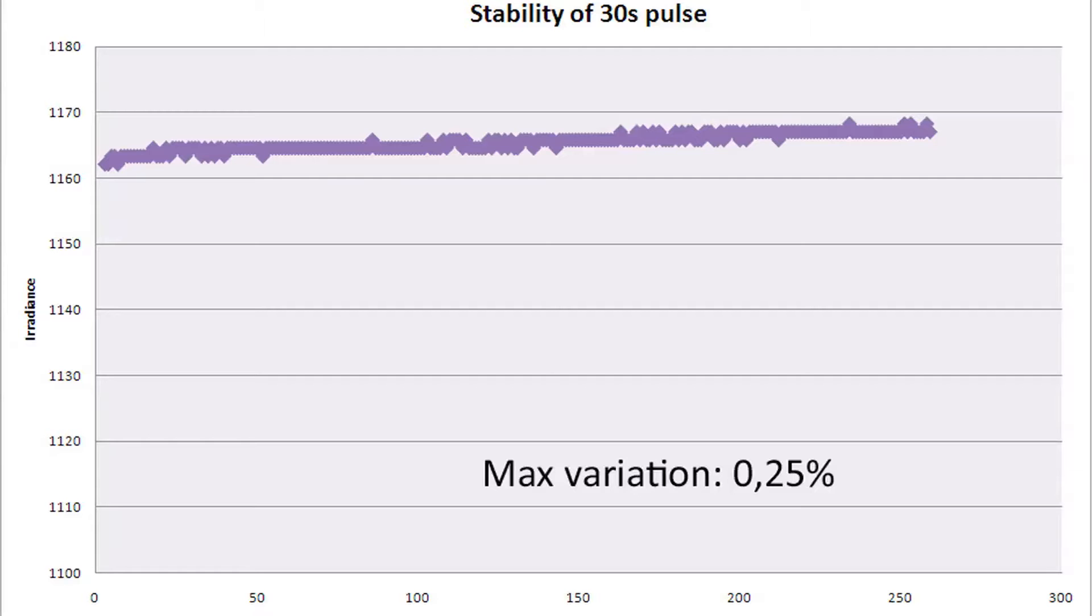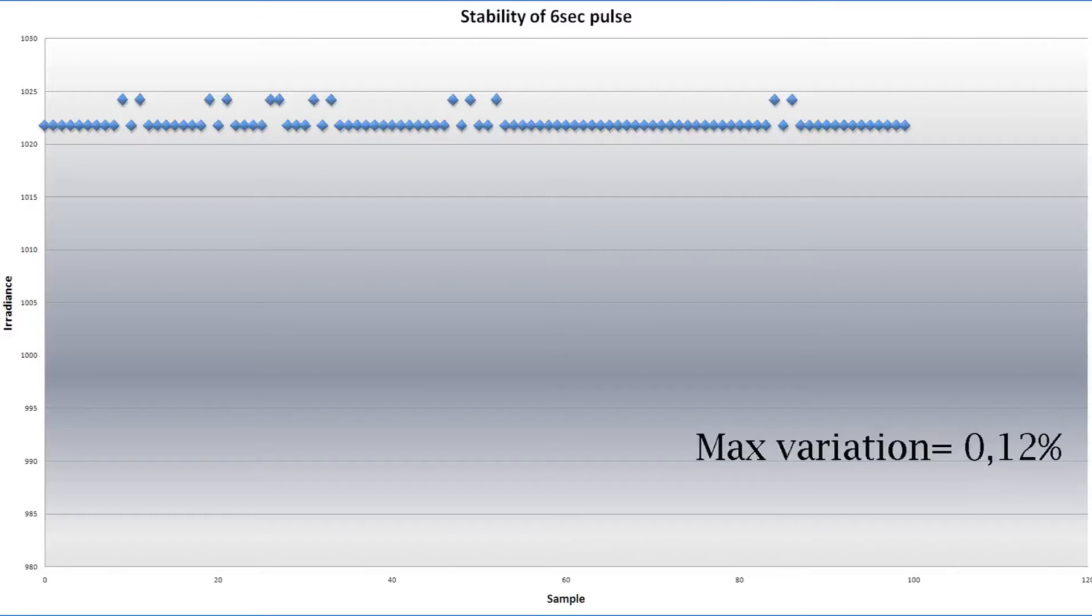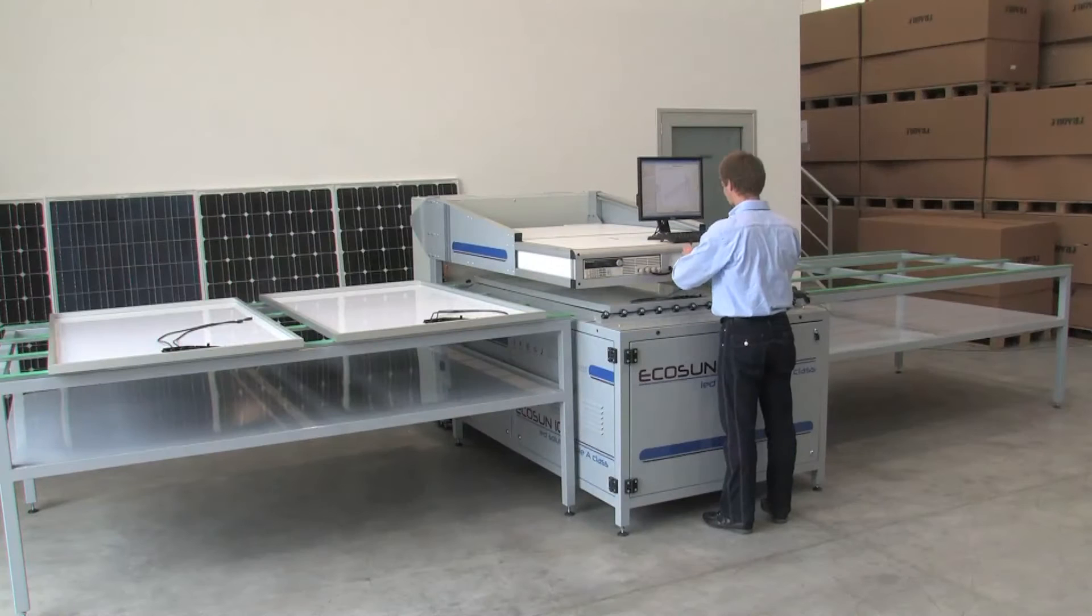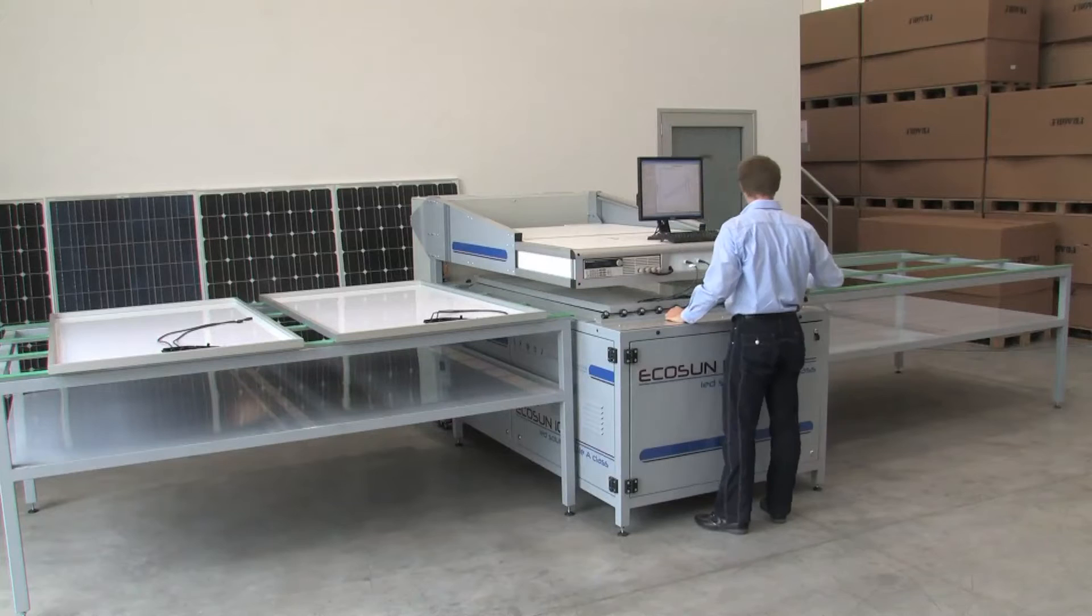Radiation stability. The Sun Simulator Echo Sun 10L has a very high temporal stability, also with very long pulse. For a pulse of 30 seconds, the maximum variation is 0.25 percent, while with a pulse of 10 seconds, the variation reaches an even lower value of 0.18 percent.